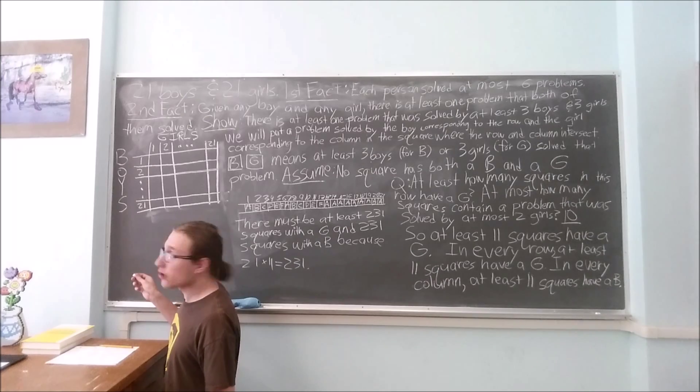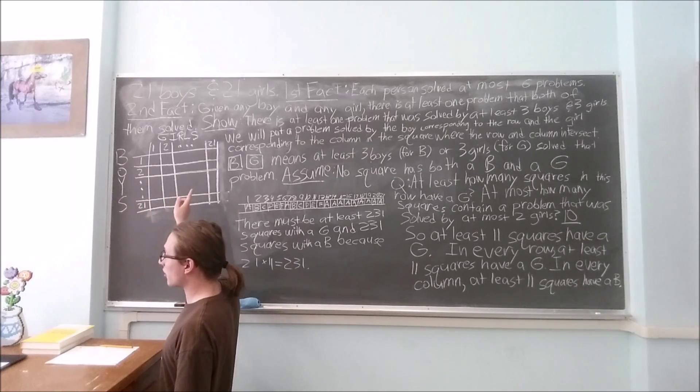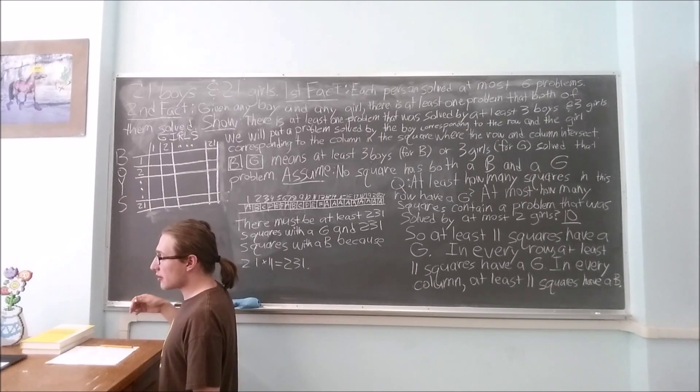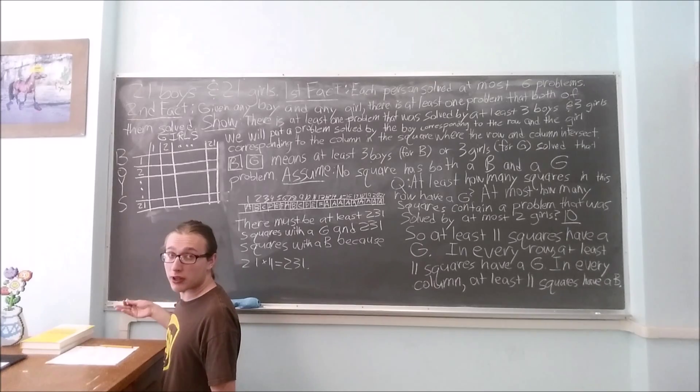We see that our chart only has twenty-one rows and twenty-one columns, and that means that it only has 441 different squares.